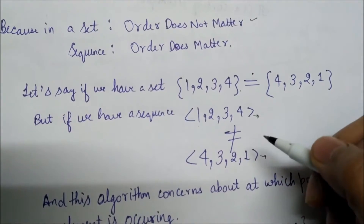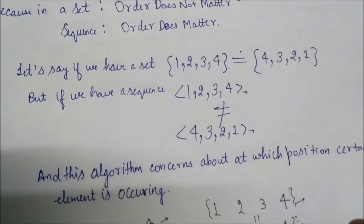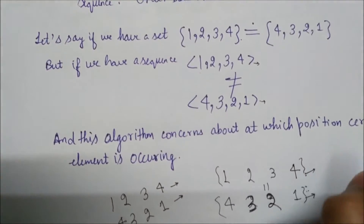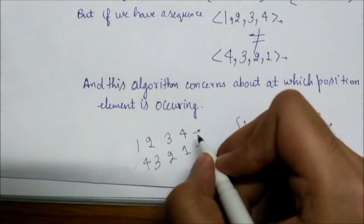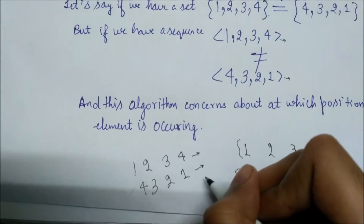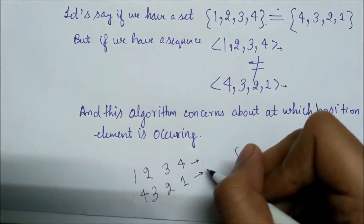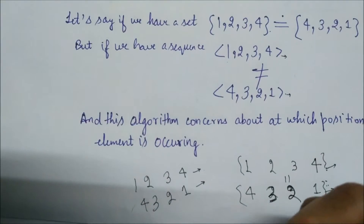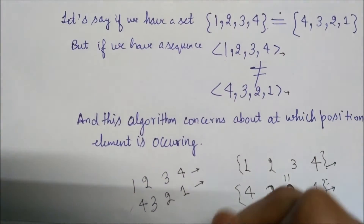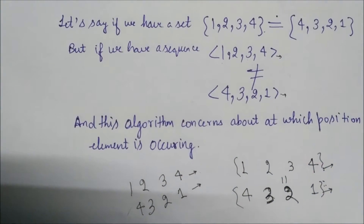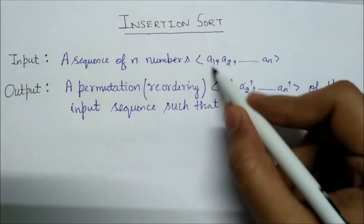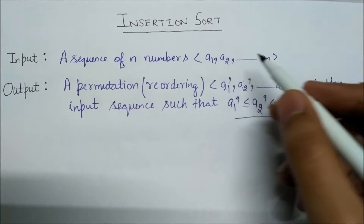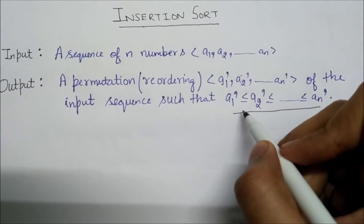Insertion sort concerns about at which position a certain element is occurring. So if we have to sort 1,2,3,4 versus 4,3,2,1 these would take different amounts of time — that's why we use a sequence as input. The output would be a permutation of these numbers that satisfies the sorted order.